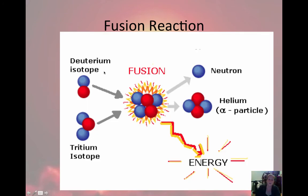Here we have two smaller nuclei that come together to produce a larger, heavier particle of helium. These are two isotopes of hydrogen — deuterium and tritium — and they fuse together, producing helium. And of course, lots of energy is released.